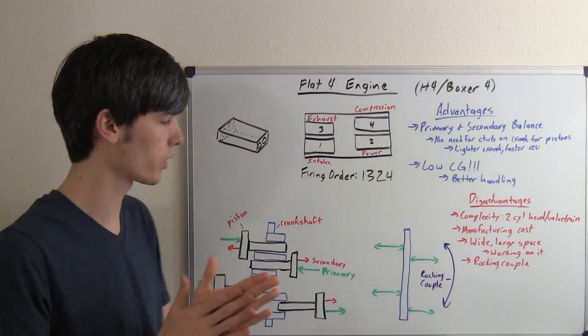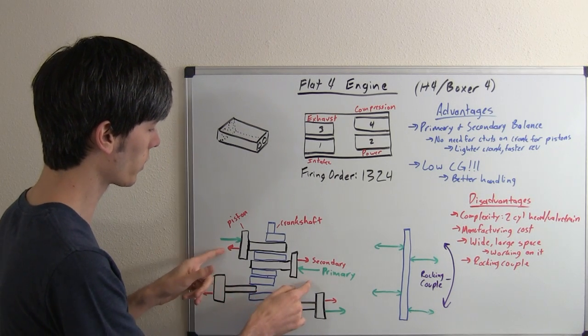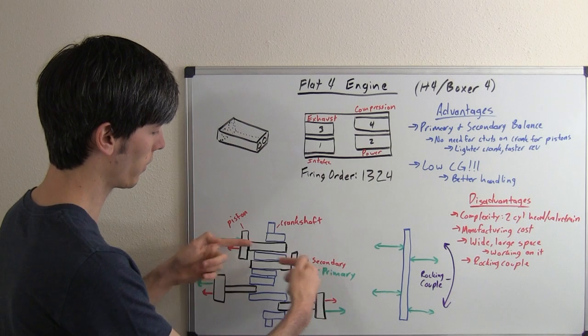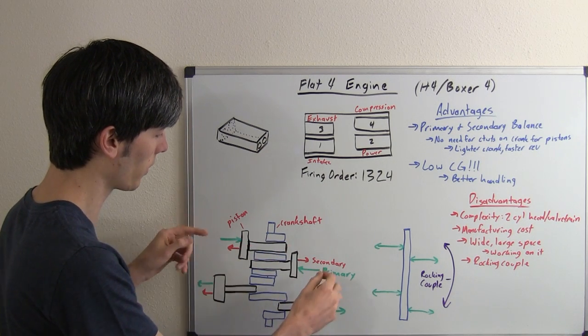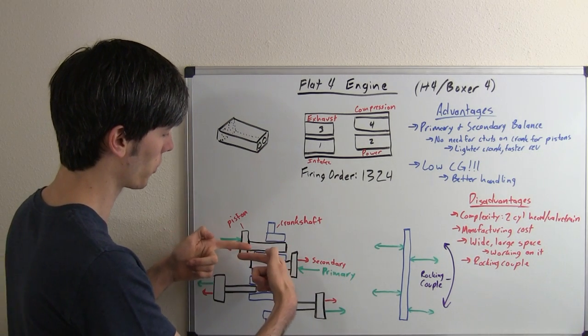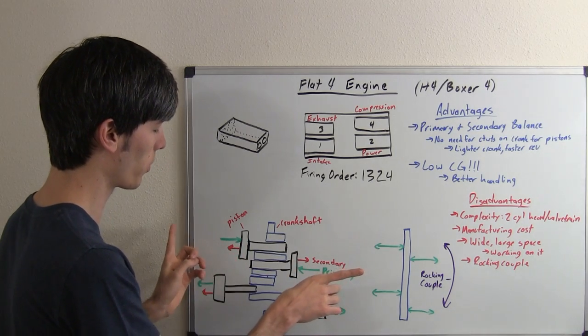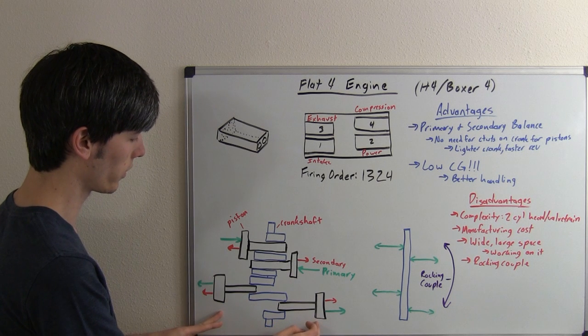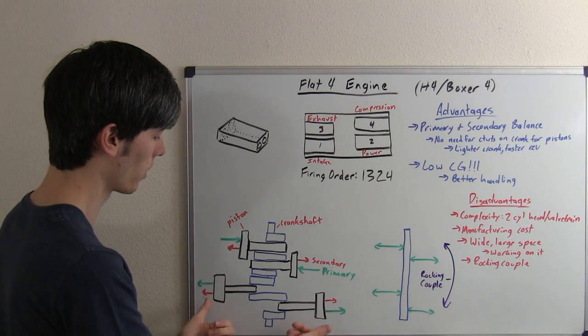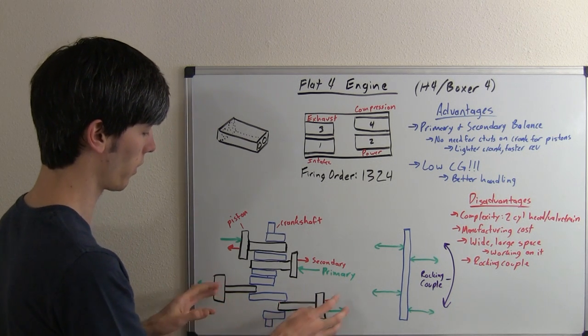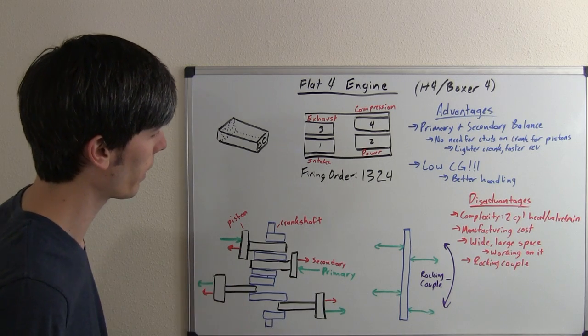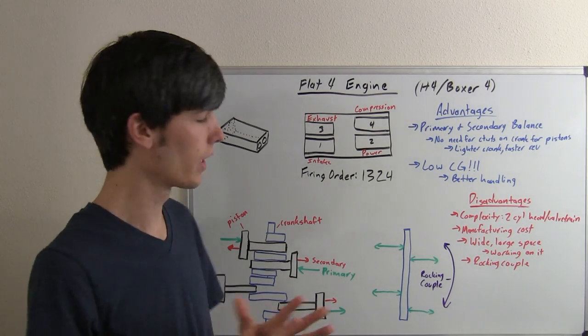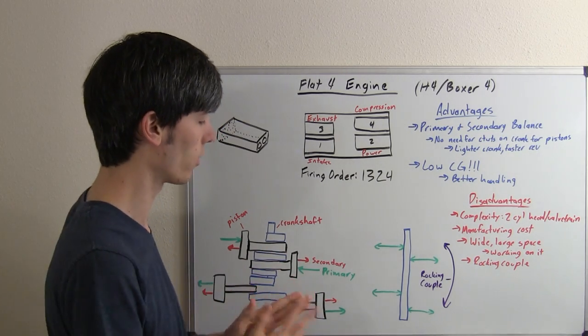Basically you've got your primary forces here. You can see both going in as this cylinder reaches bottom dead center, and those two forces are going to cancel each other out. The secondary forces are going to be pointing away from each other, so those two forces cancel out. Same thing with cylinders 1 and 2 as they reach top dead center - all of the forces going out, but they're equal and opposite, so they balance each other out. Your primary and your secondary forces in a boxer engine are going to be balanced.